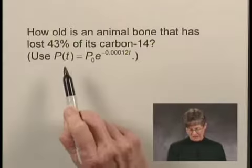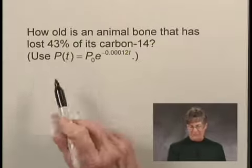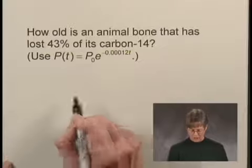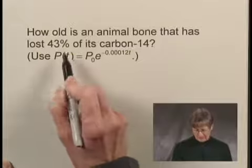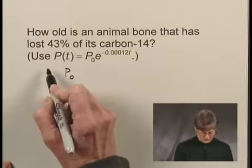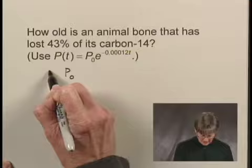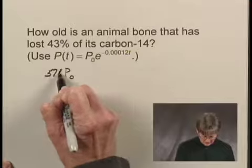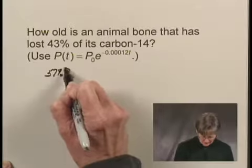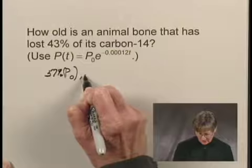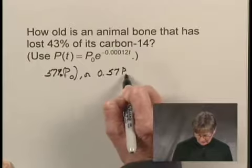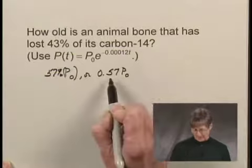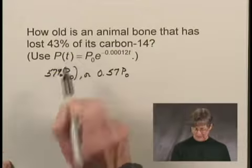Now, if this animal bone has lost 43% of its original amount of carbon-14, let's call that original amount P₀. After losing 43%, 57% of P₀ remains, or 0.57P₀. This is what we're going to substitute for P(t) in this formula.